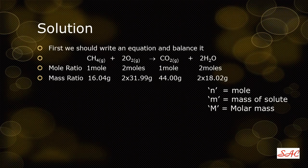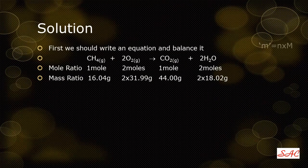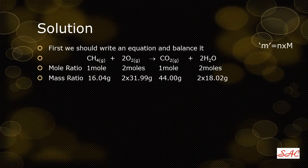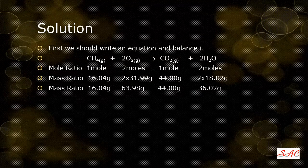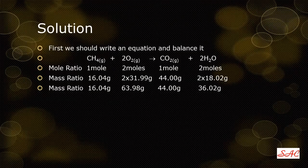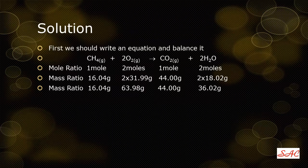Rearranging the equation gives m = n × M. Using this equation to calculate the mass ratio, the complete values are: two moles of oxygen = 63.98 g, one mole of methane = 16.04 g, one mole of carbon dioxide = 44 g, and two moles of water = 36.02 grams. What this tells you is that 16.04 grams of methane will require 63.98 grams of oxygen to undergo complete combustion.